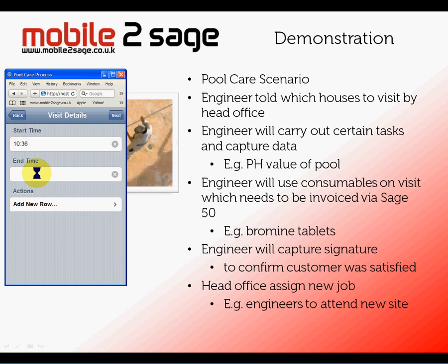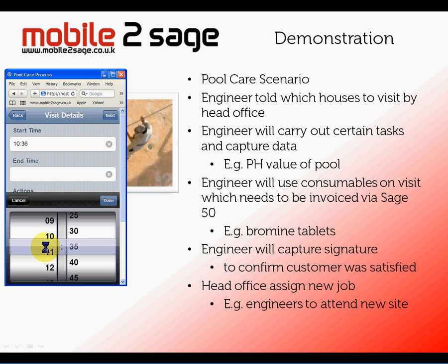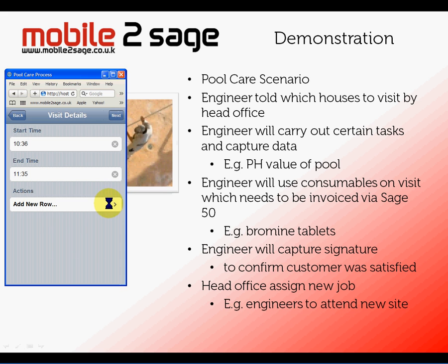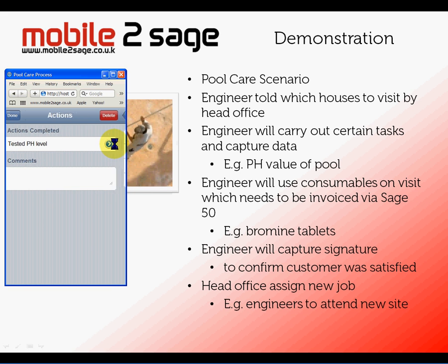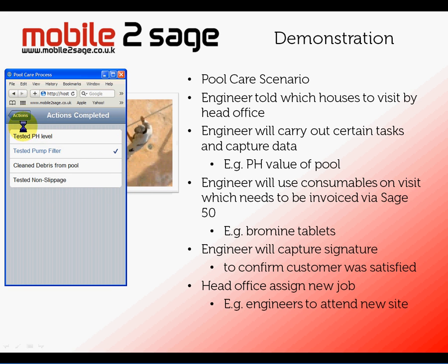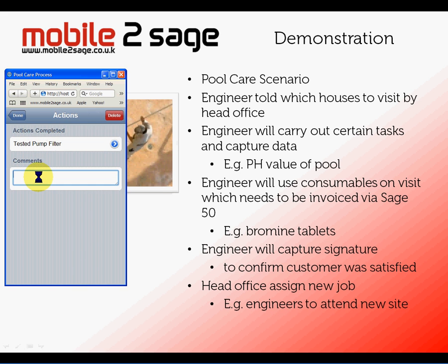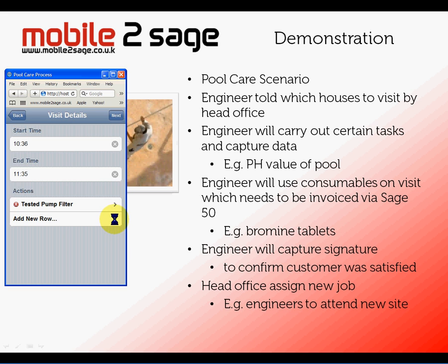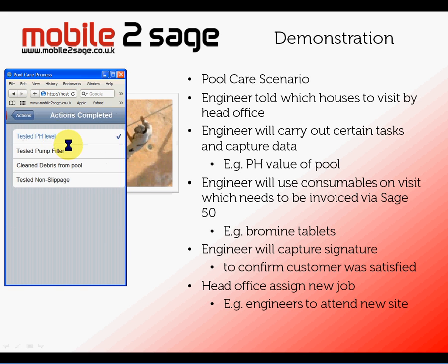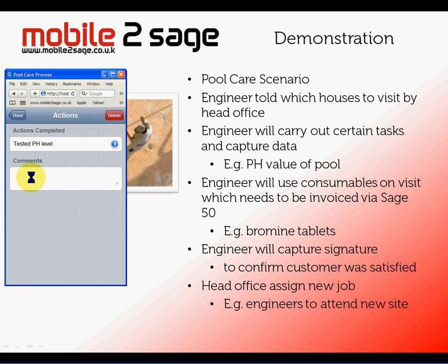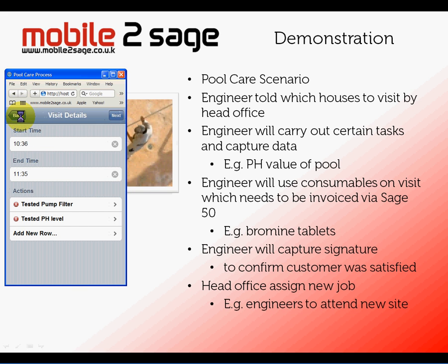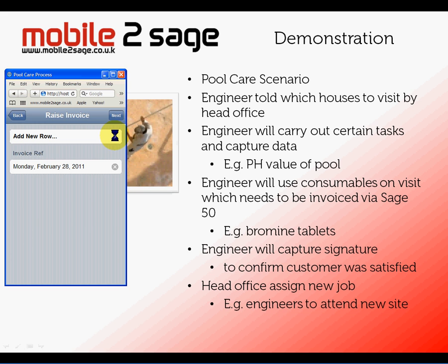On the next screen I can capture the start time — 10:36 — and he's going to finish at 11:40, and he's going to carry out various different tasks. These are all user definable and very intuitive. The first thing he's going to do is check the pump filter and mark it as OK. Then he's going to check the pH value of the pool and find it to be a little bit low, and having done that he went and added some bromine tablets.